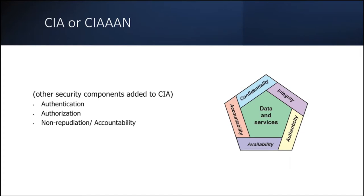So we have CIAAN. C-I-A we already know. The next two things — the two extra A's coming. The first hashed A is called Authentication or Authenticity. The second A is called Accountability. So there is a diagram with detail — this A is basically this N.